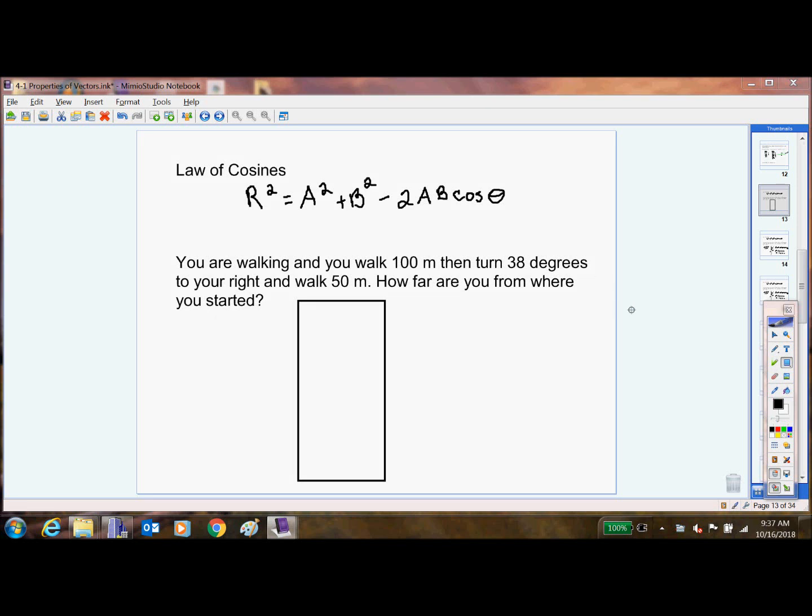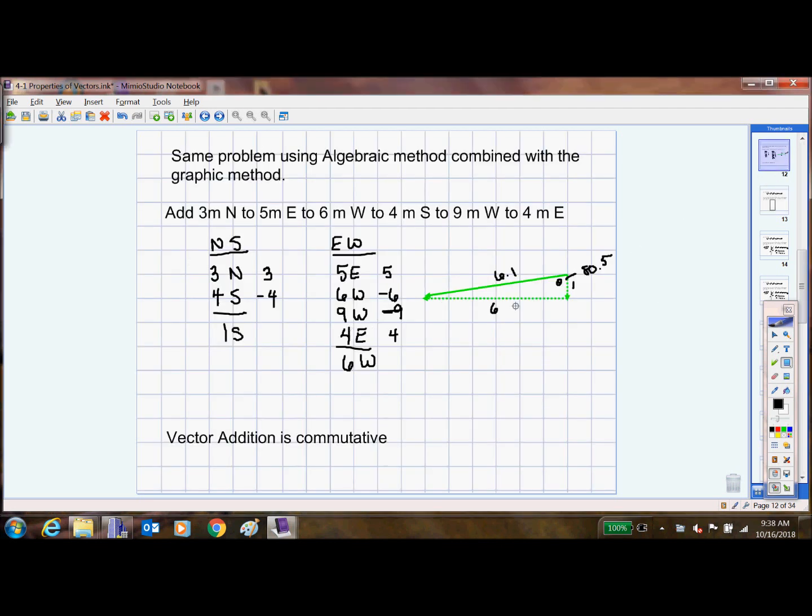So what we did the last couple days was talking about vectors. What specific property was like our key point? Commutative. Good, so vector addition is commutative, and what we remember is that because you can add vectors in any order, you can gather them up.